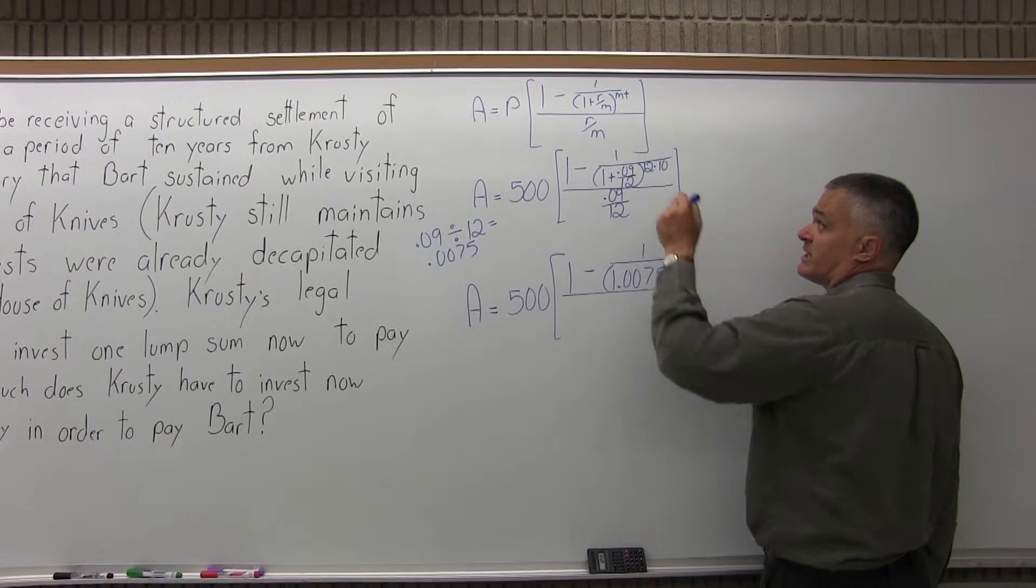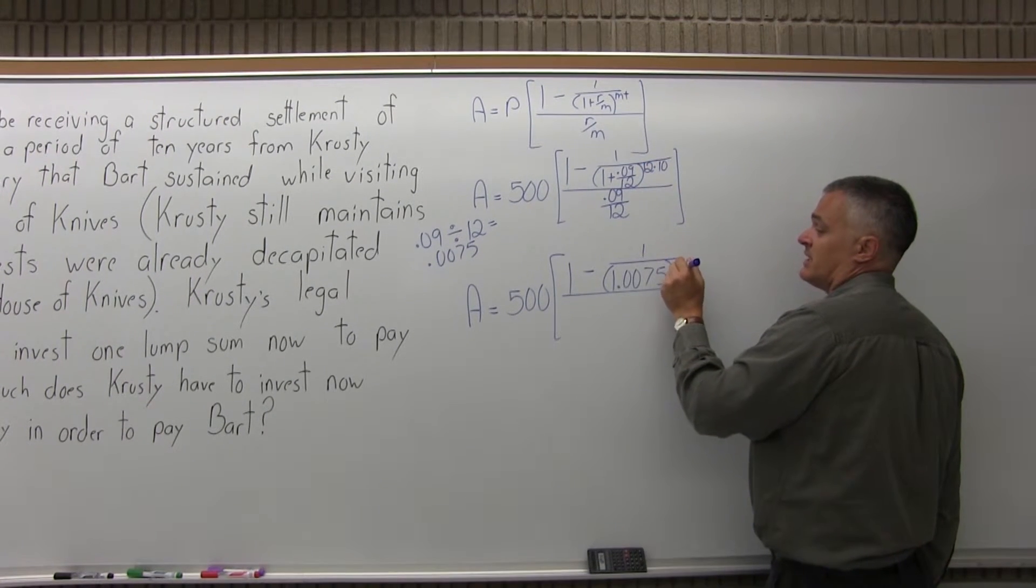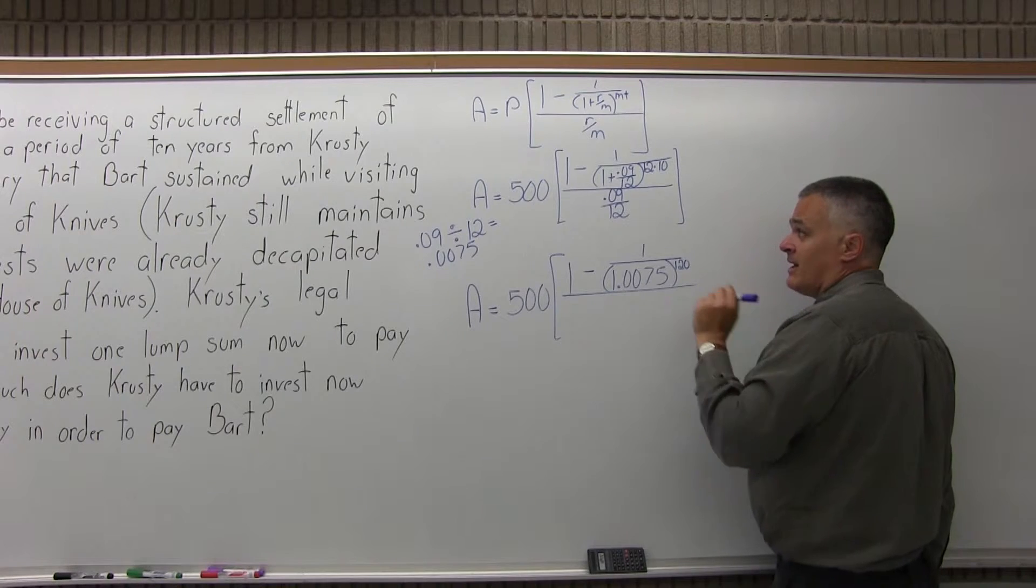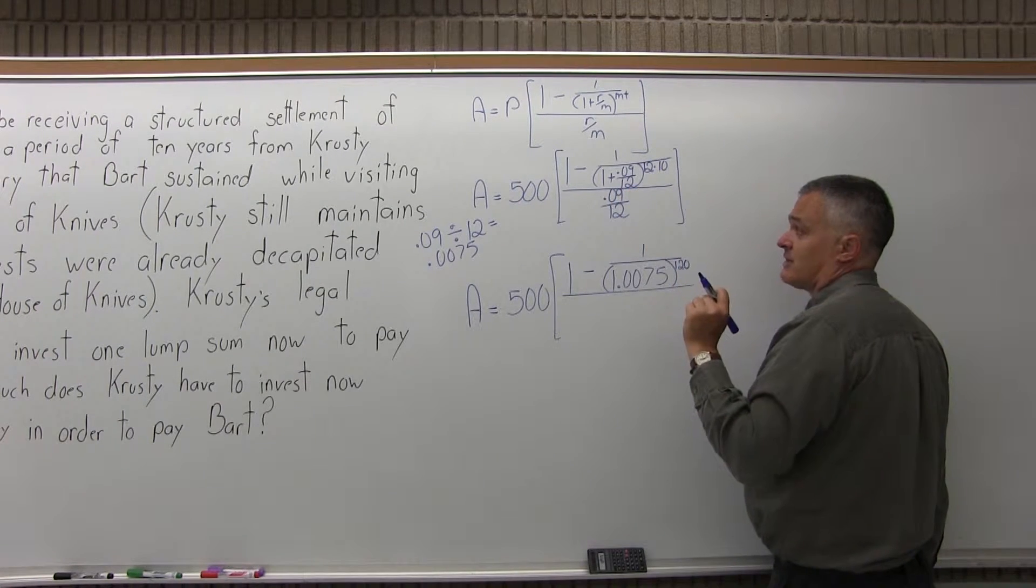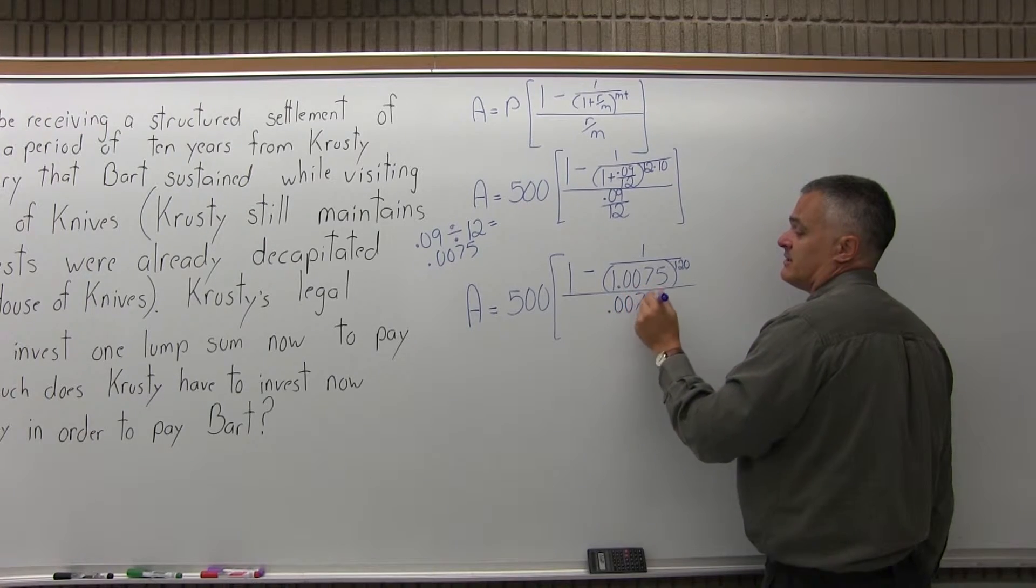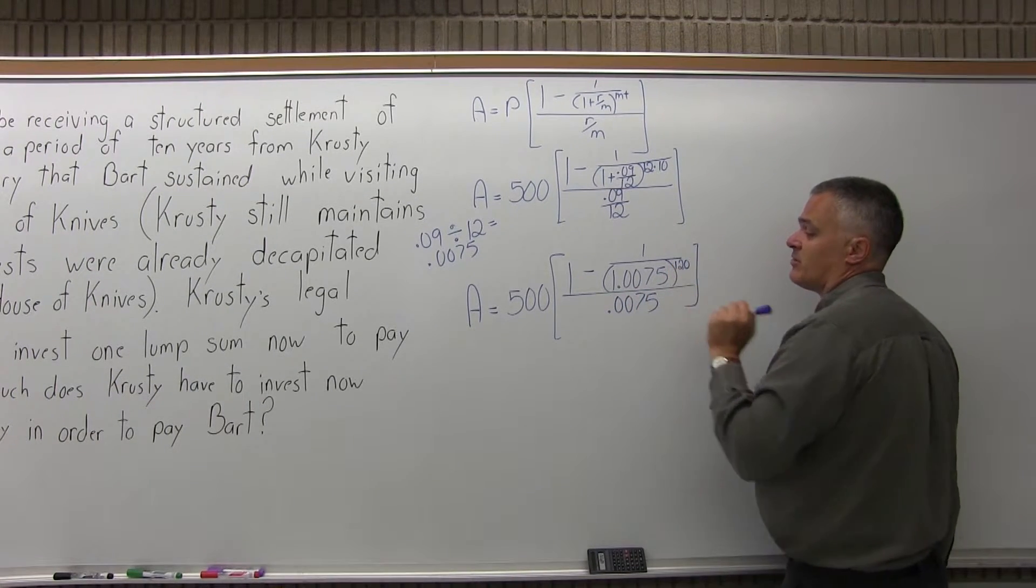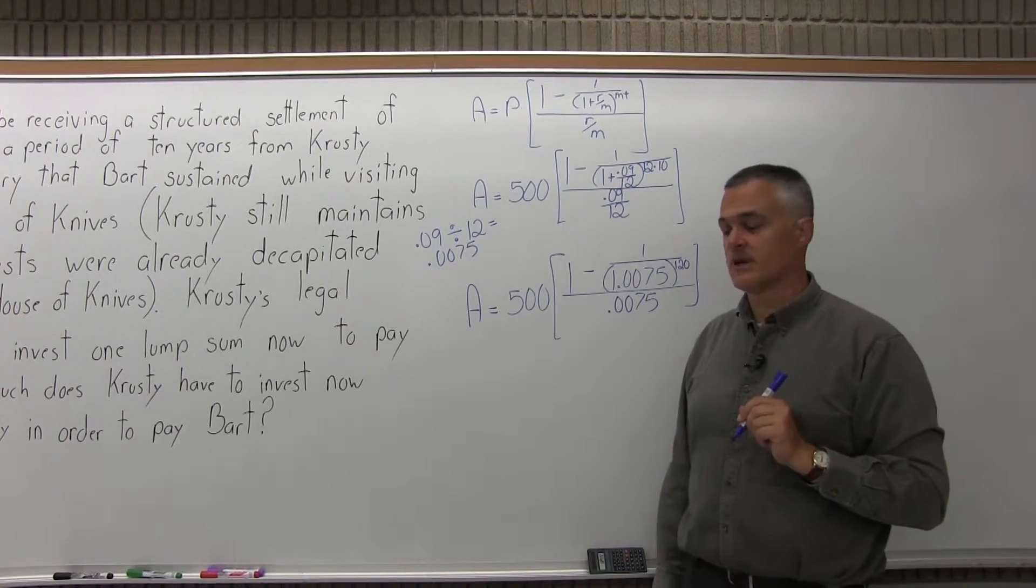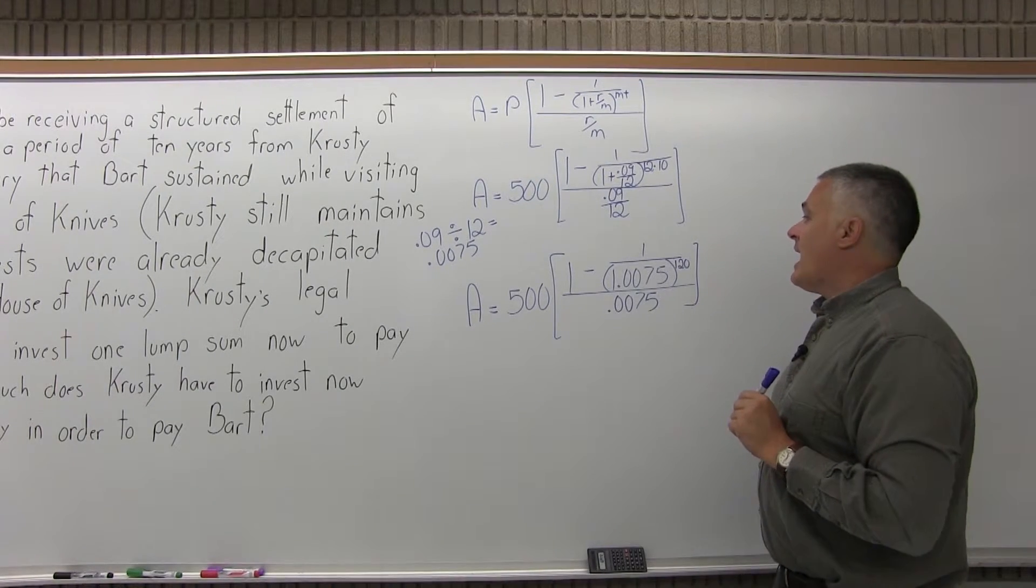It's raised to an exponent, and that exponent is 12 times 10, so the exponent would be 120. Then in the denominator of the brackets, the .09 over 12 is going to give you .0075. Again, in the denominator of the brackets, you don't have the plus 1 in front of it.